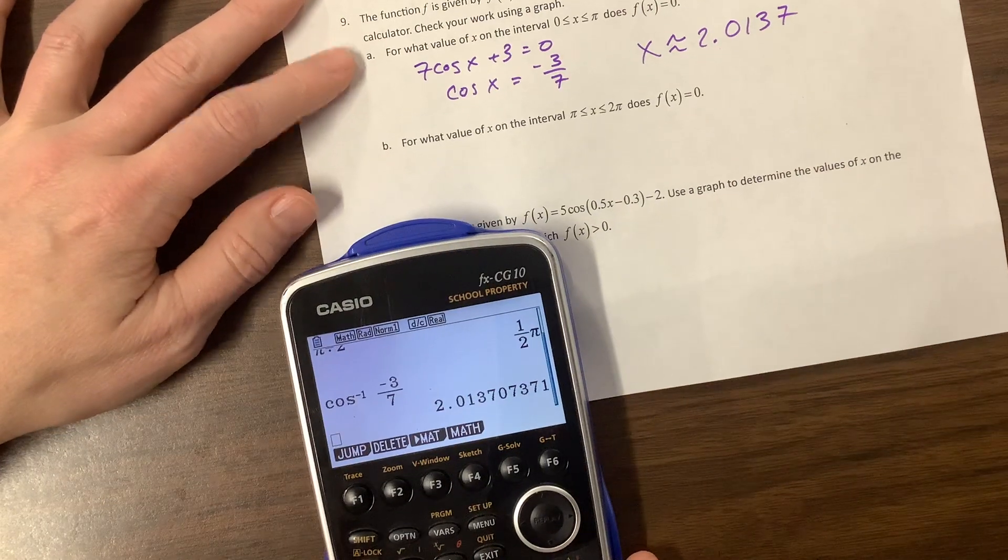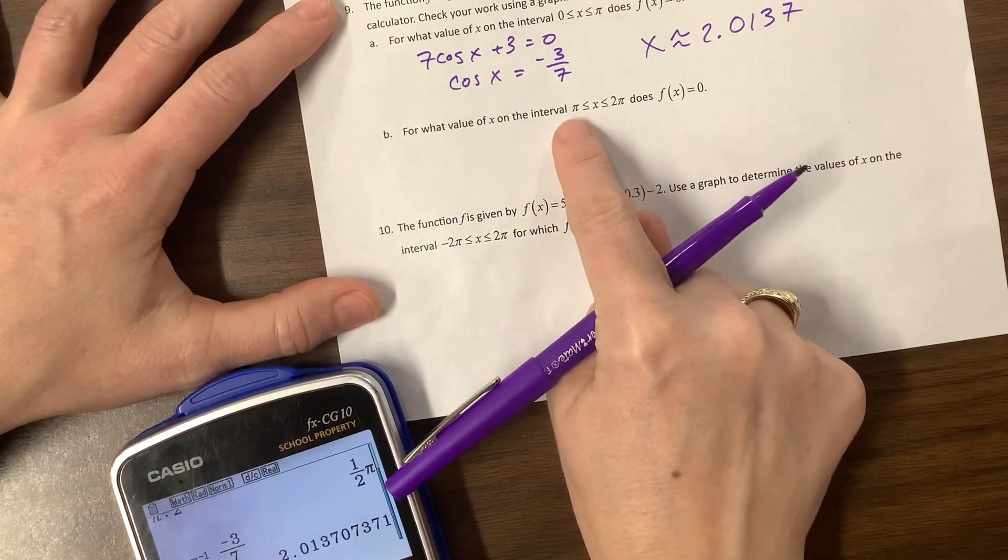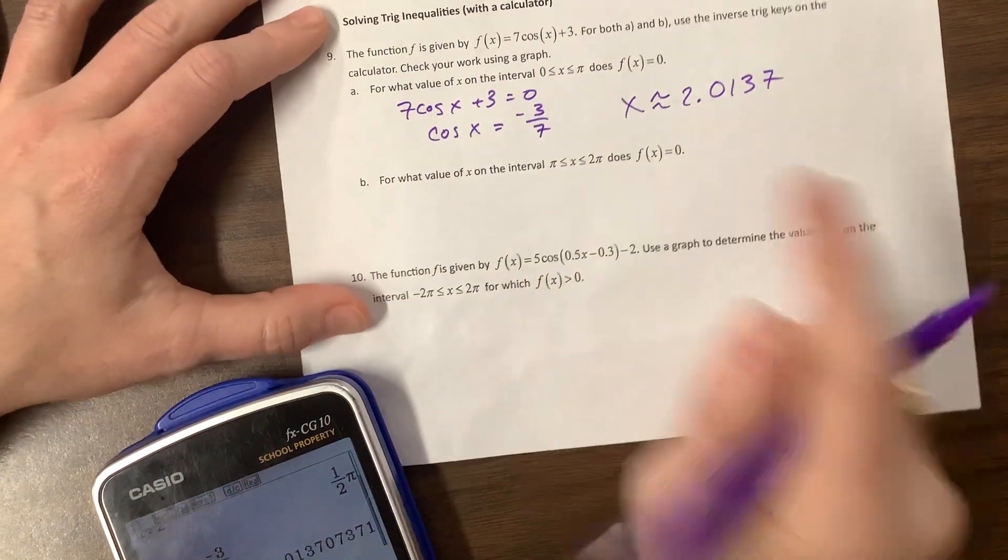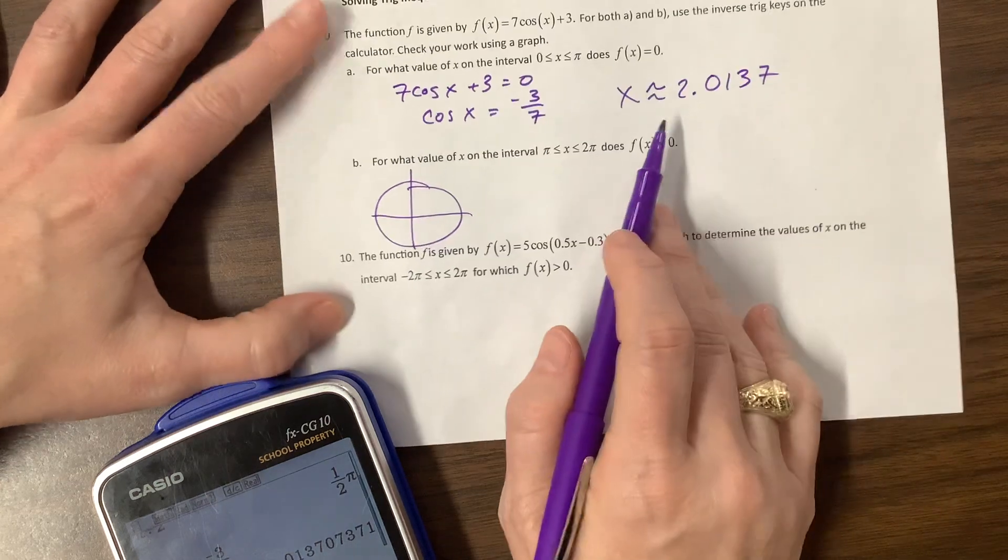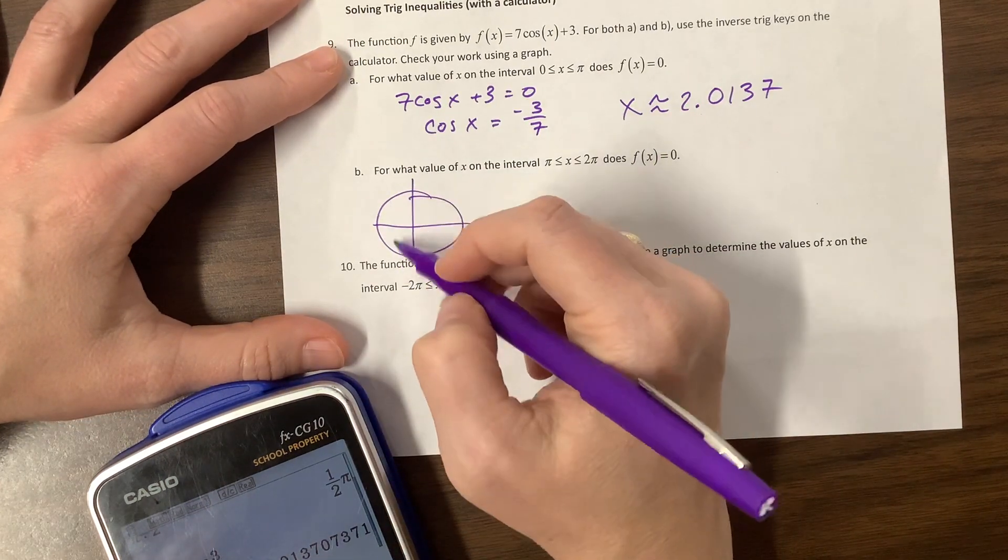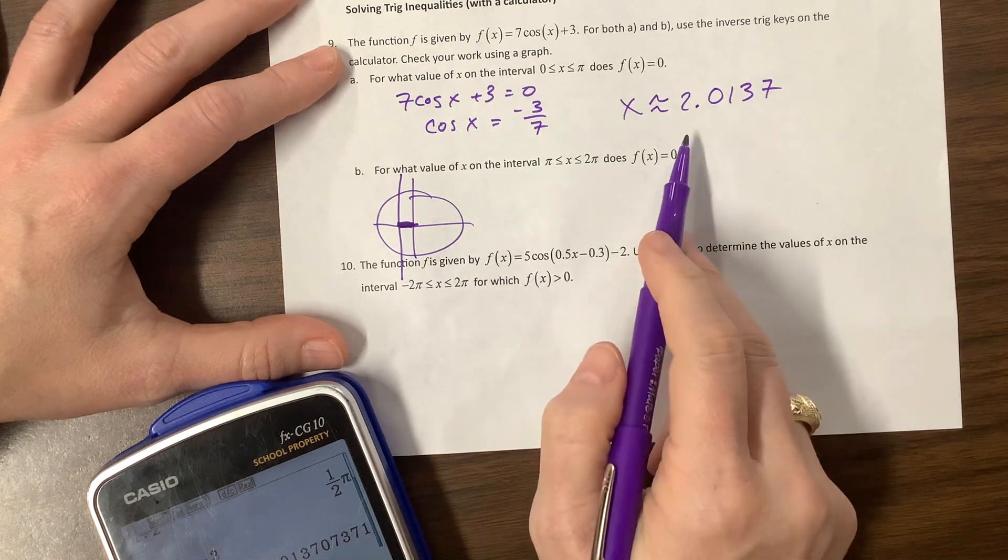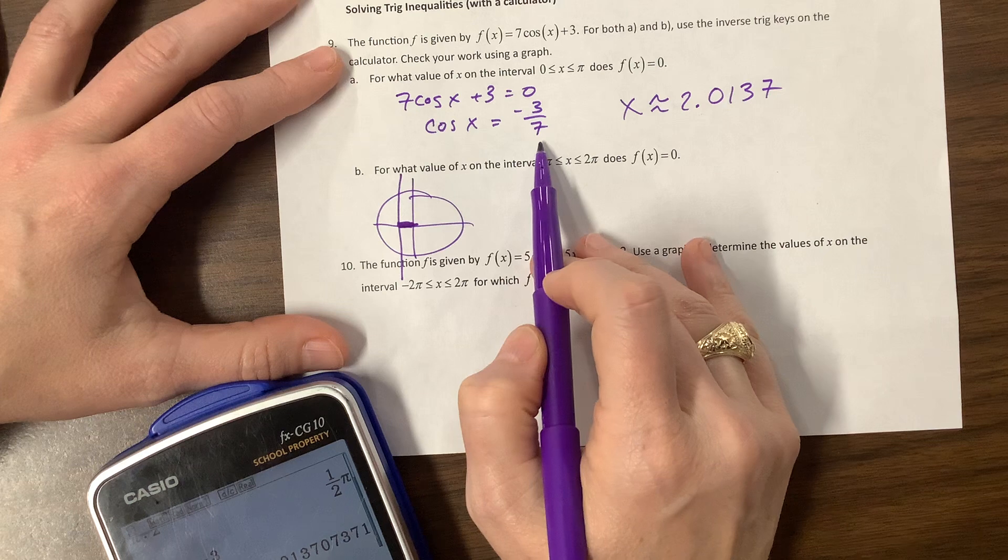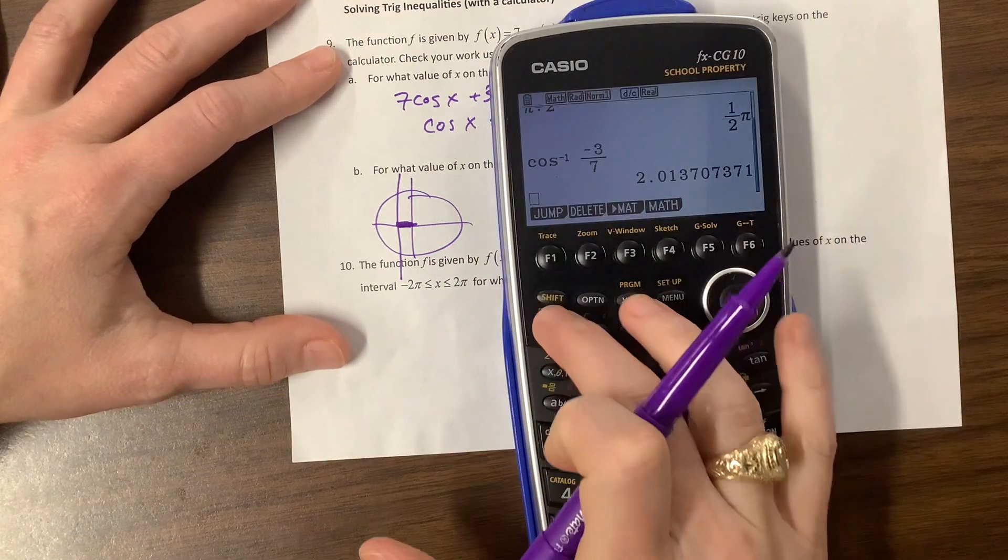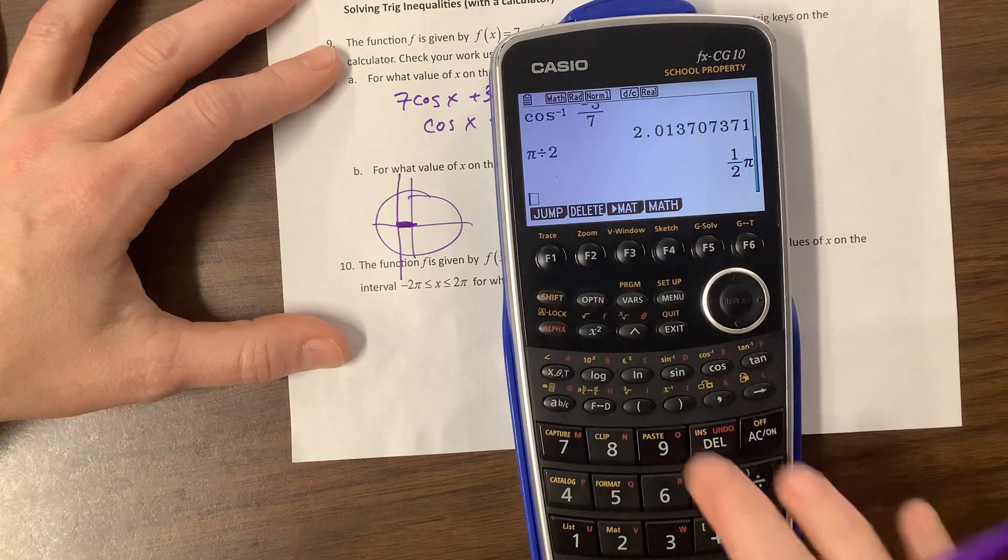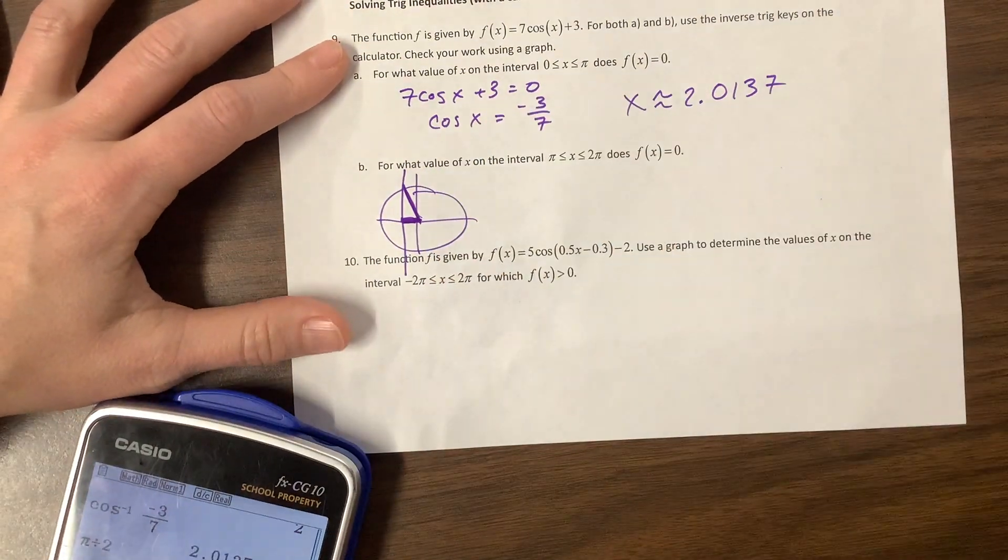And then they say, for what value on the interval does, so now they're saying, you now have to live between pi and 2 pi. So what's happening, this value, if you think unit circle, this value is not exactly on the unit circle, but 2.1 whatever is going to be in quadrant 2. So the other place that has, so wherever that is, but let's say that this cosine value, that x value is, I lied. This cosine is negative 3 sevenths. The angle is 2.0137, which is more than, so notice that lives, this angle is living in quadrant 2.